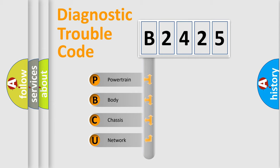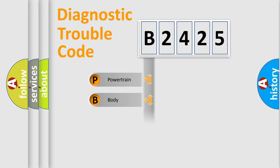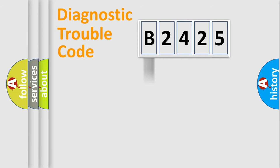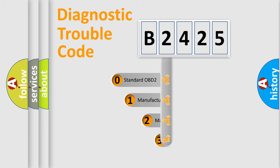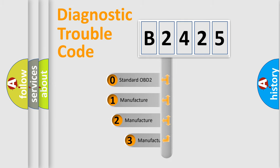We divide the electric system of an automobile into four basic units: Powertrain, Body, Chassis, and Network. This distribution is defined in the first character of the code.